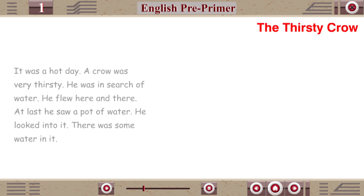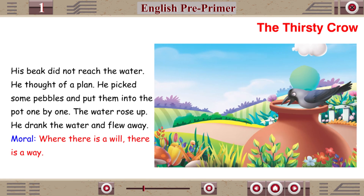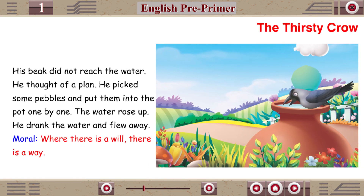The Thirsty Crow. It was a hot day. A crow was very thirsty. He was in search of water. He flew here and there. At last he saw a pot of water. He looked into it. There was some water in it but his beak did not reach the water. He thought of a plan. He picked some pebbles and put them into the pot one by one. The water rose up. He drank the water and flew away. Moral of the story: Where there is a will, there is a way.